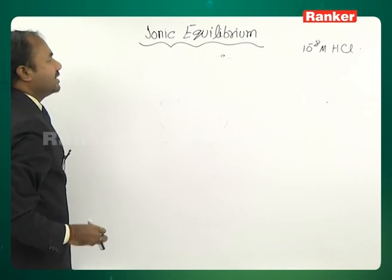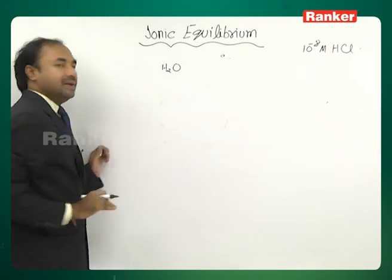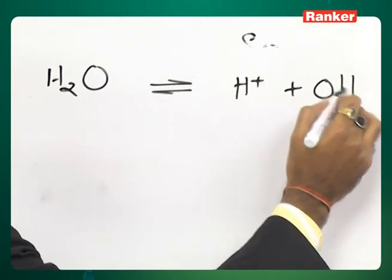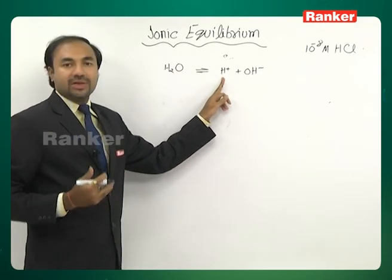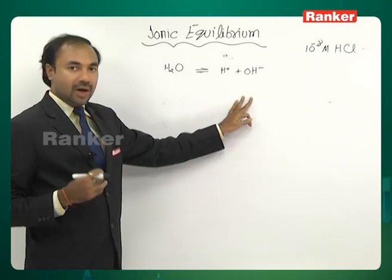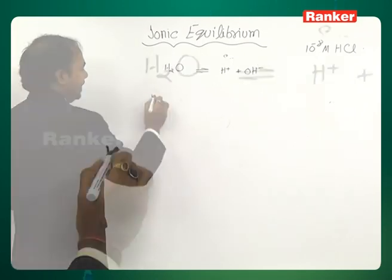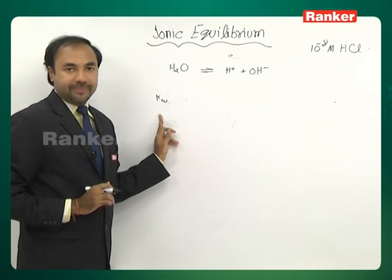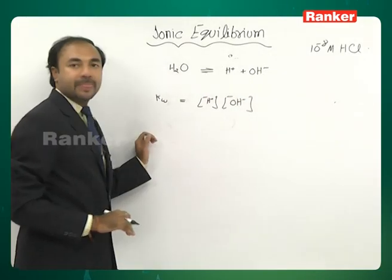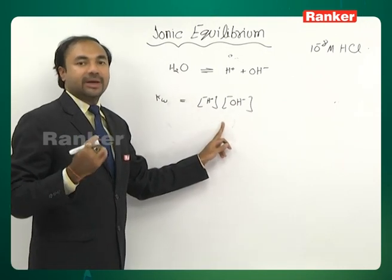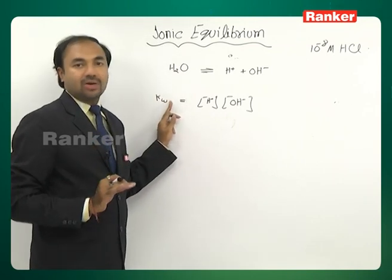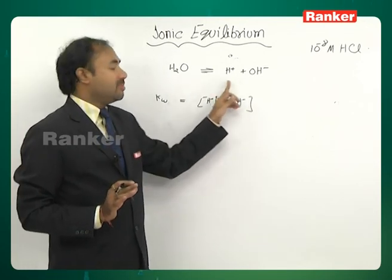At 25°C — in fact at any temperature and under any conditions — water is always in equilibrium: H₂O ⇌ H⁺ + OH⁻. In some cases this is shown as H₃O⁺ because H⁺ ions exist in water as H₃O⁺. The equilibrium constant for this is called Kw, the ionic product of water, equal to [H⁺][OH⁻]. We do not include the concentration of water because at a particular temperature it remains constant and is already incorporated into Kw.